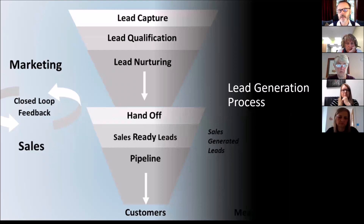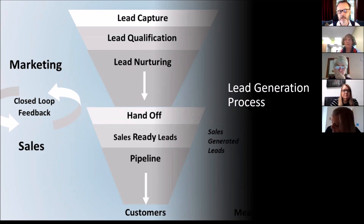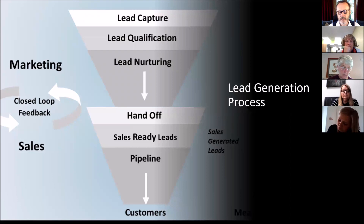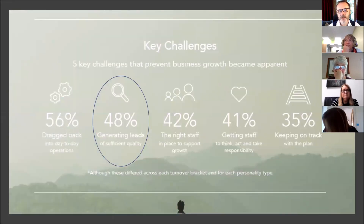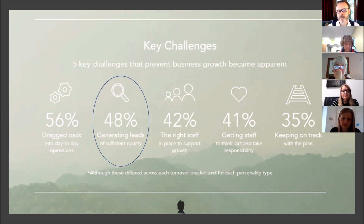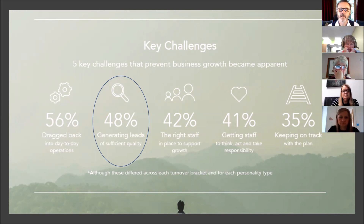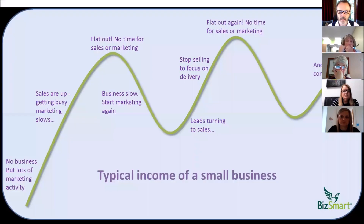We're coming back to the execution pillar and the business development aspects. Back in November we looked at the lead generation matrix and the need to have a consistent and predictable stream of on-profile leads that we can convert into customers. Research shows that generating a sufficient quality stream of leads was cited by 48% of all businesses surveyed as a top five challenge, rising to 60% for businesses up to half a million turnover — one of the key reasons some businesses don't scale beyond a certain point.